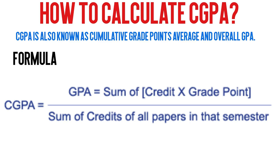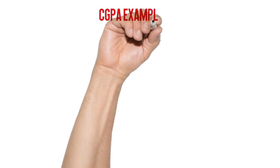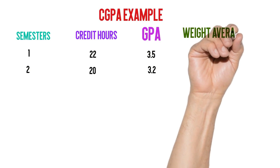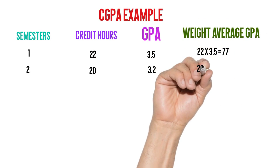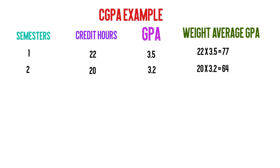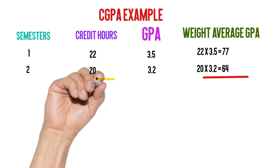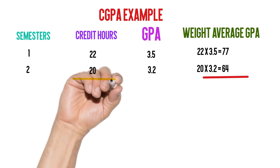Let me explain the calculation of CGPA with the help of an example. A student has 22 credit hours in semester 1 and got a GPA of 3.5. In the second semester, they had 20 credit hours and got a GPA of 3.2. First, we multiply credit hours by GPA: in semester 1, 22 credit hours multiplied by 3.5 gives us a weighted average GPA of 77. In semester 2, 20 credit hours multiplied by 3.2 gives us a weighted average GPA of 64.